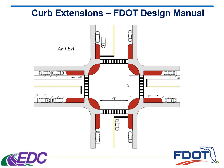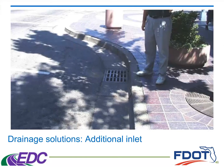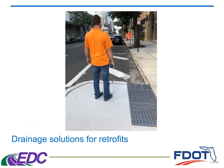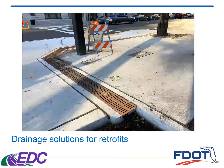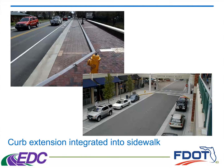On curb extensions, we prefer a smaller turning radius to slow down right-hand turn speed movements from vehicles. Another consideration is drainage — for new construction we can handle that, but for retrofit conditions it creates some issues. We don't want people to be discouraged from placing curb extensions due to drainage. There are innovative solutions; these are examples seen in Tampa recently — solutions for drainage using existing facilities. Curb extensions can also be integrated into sidewalks to give a more natural feel and create that appearance of a condensed corridor for drivers.